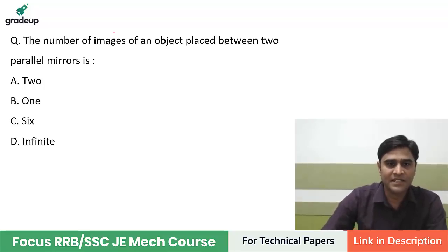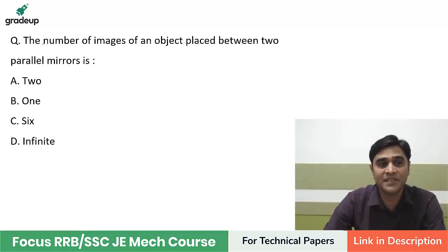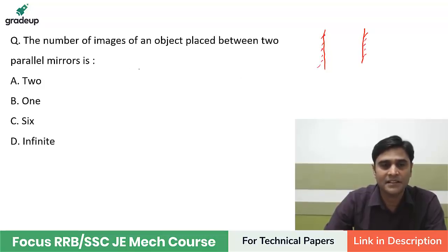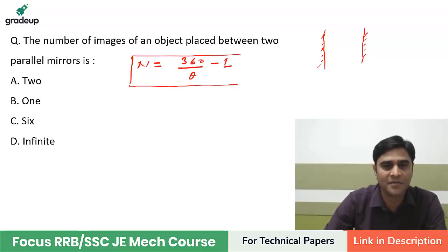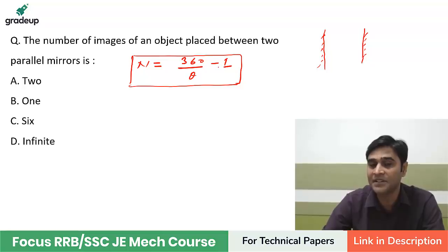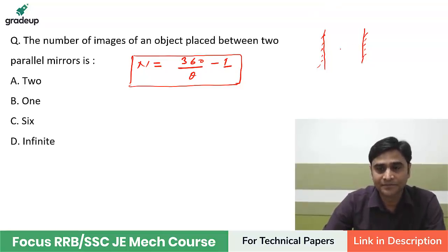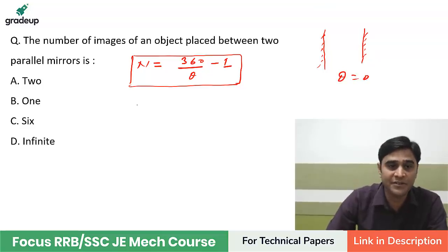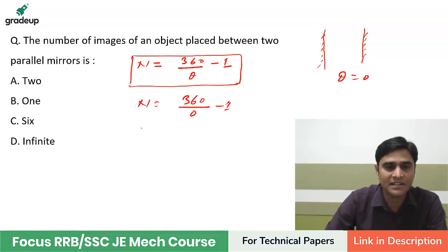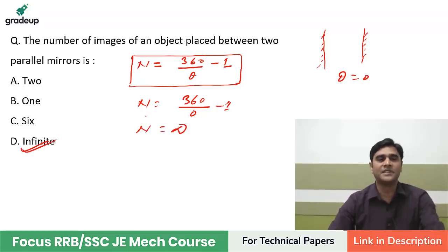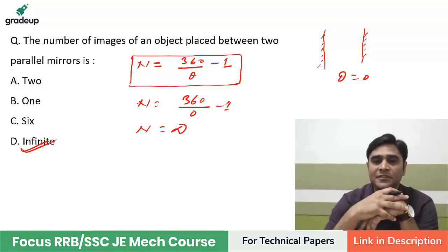Number of images formed when an object is placed between two parallel mirrors — the formula to calculate number of images is 360 divided by theta minus 1, where theta is the angle between two plane mirrors. If two plane mirrors are parallel to each other, then theta equals 0, so n equals 360 divided by 0 minus 1, which is infinity. So infinite images are formed when an object is placed between two parallel mirrors.